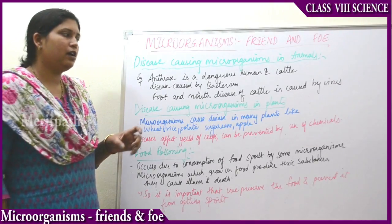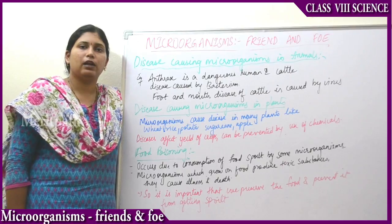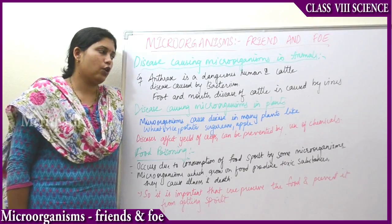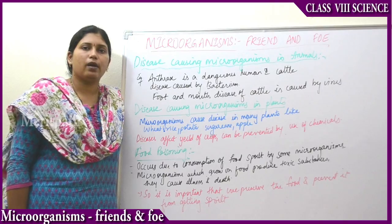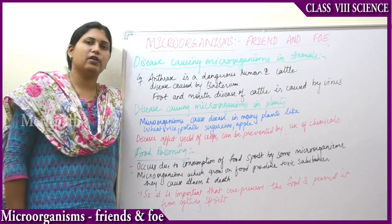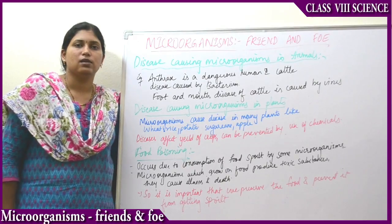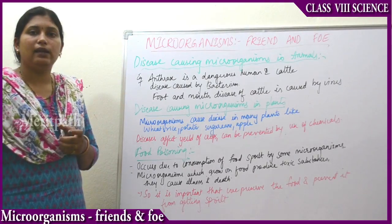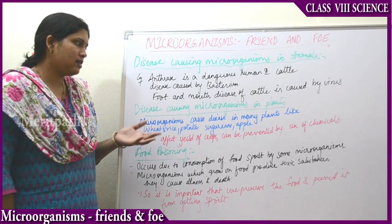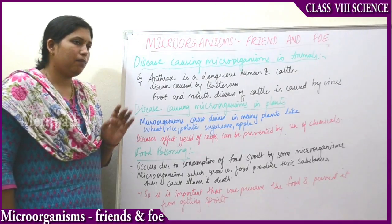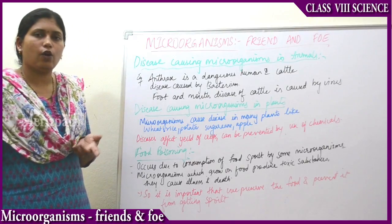How can these diseases be prevented? These can be prevented by use of chemicals. If we spray chemicals, fertilizers, and pesticides onto the plants, then these diseases can be avoided. For example, citrus canker is a disease which affects lemons, and the lady's finger has a yellow vein disease.